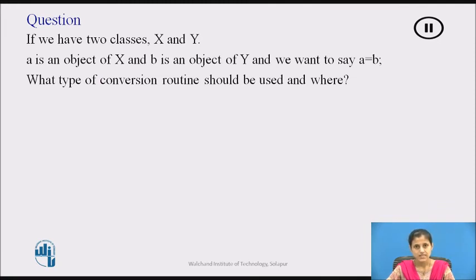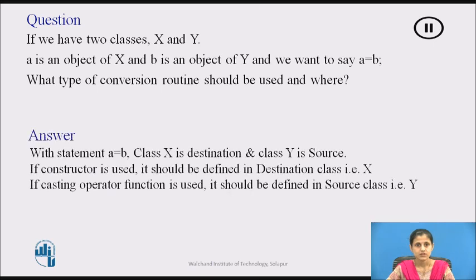Now, if we have two classes X and Y, where A is an object of class X and B is an object of class Y, and we want to say A = B — what type of conversion routine should be used and where? With the statement A = B, class X is the destination and class Y is the source. If a constructor is used, it should be defined in the destination class, that is, X. If a casting operator function is used, it should be defined in the source class, that is, Y.